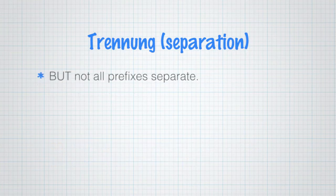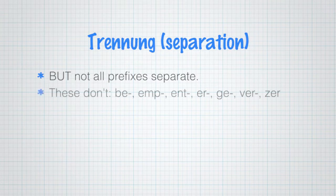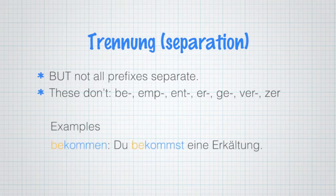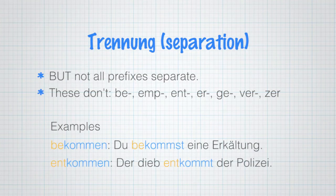Not all prefixes separate, and there's a little list of those that don't ever separate: be, emp, ent, er, ge, ver, zer. Bekommen - du bekommst eine Erkältung. Entkommen - der Dieb entkommt der Polizei.